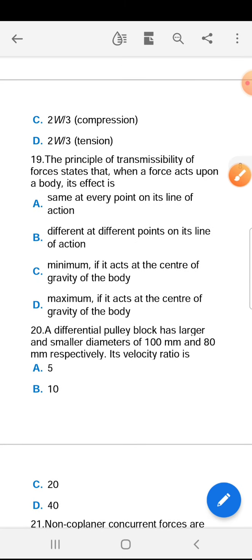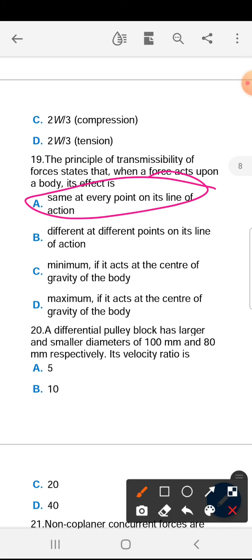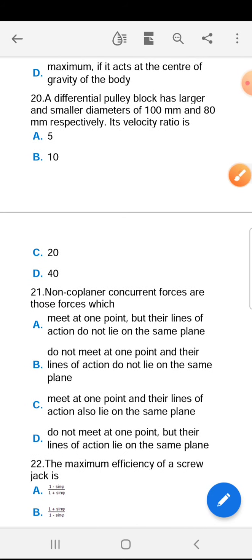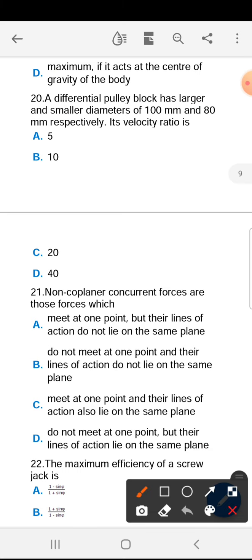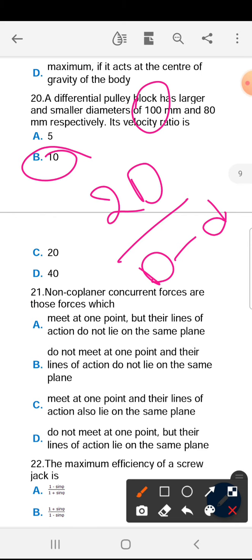Nineteenth is A. Twentieth is B. Velocity ratio is 2 into capital D by capital D minus small d, so capital D is the bigger one, so 100. 2 into 100 by 100 minus 80, so 200 by 20 is 10.